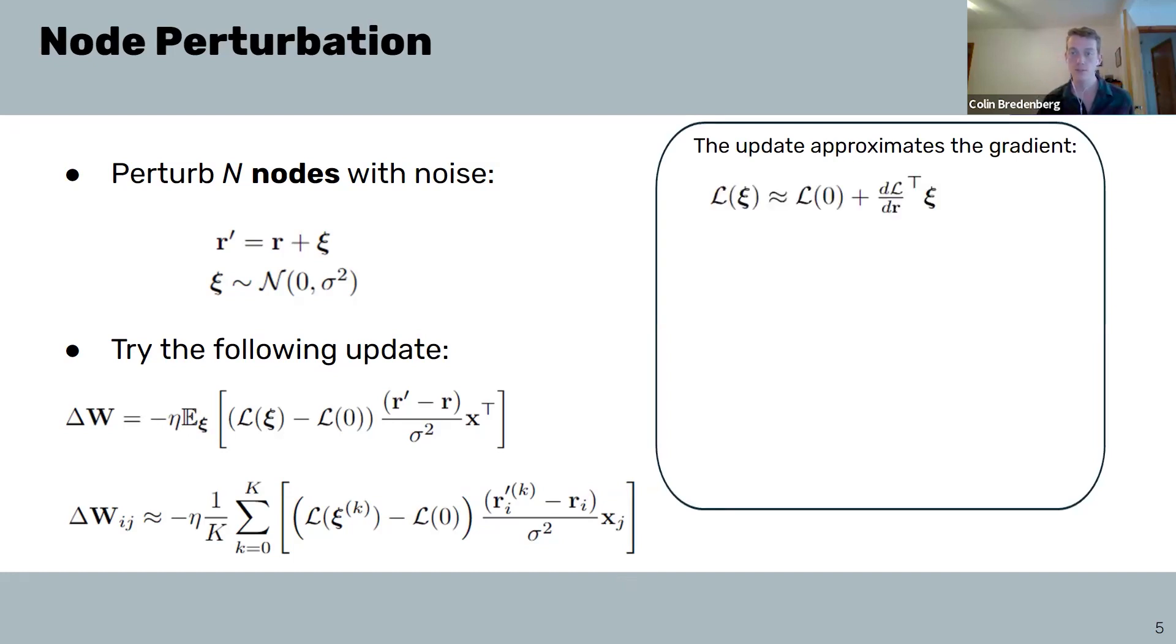We start by Taylor expanding our loss and plugging into our parameter updated equation. The only term that remains after taking expectations, similar to weight perturbation, is the derivative of the loss with respect to neuron RI. And we can see that the presynaptic term XJ is just the derivative of the neural activation RI with respect to parameter WIJ, as seen here. So using the chain rule, we can see that our update is really just in the same way as with weight perturbation, an estimate of gradient descent.